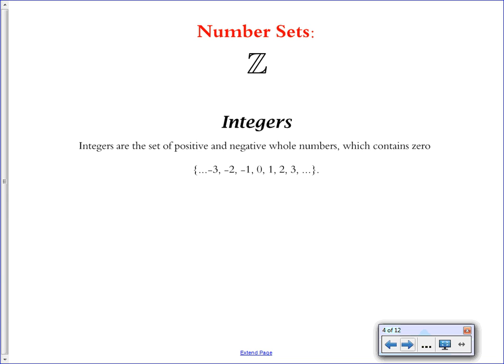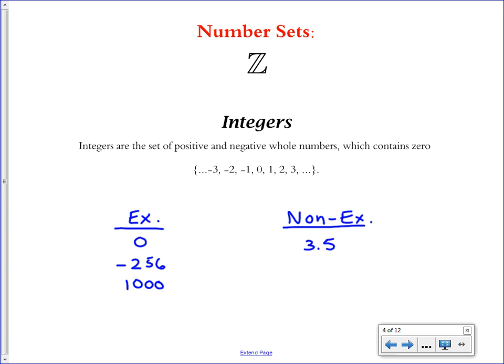The set Z is the set of integers. Integers are positive and negative whole numbers and 0. This is probably the most common set we'll be talking about this year. It includes numbers like 1, 2, 3, 4, 5, negative 1, negative 2, negative 3, negative 4, and 0 in the middle — this is typically how we label a number line. Examples of integers include 0, negative 256, 1000, negative 4, and positive numbers as well. A non-example would be 3.5, because it exists between 3 and 4 — it's a partial number.